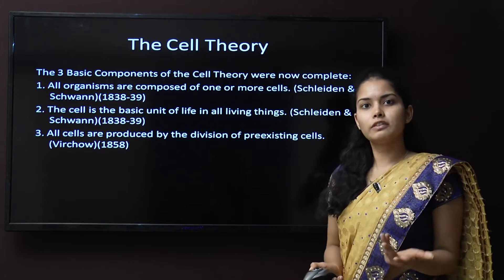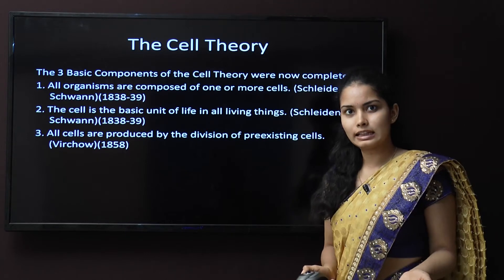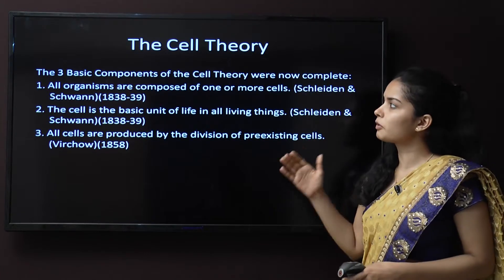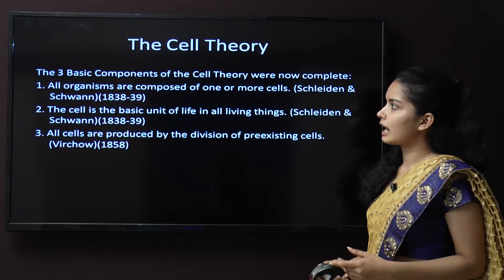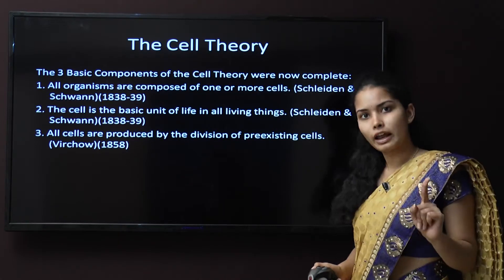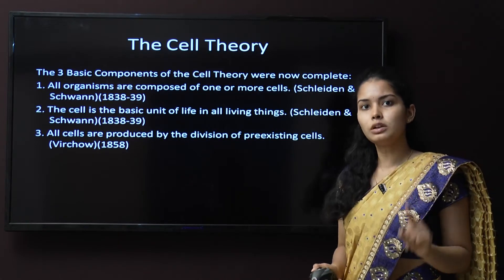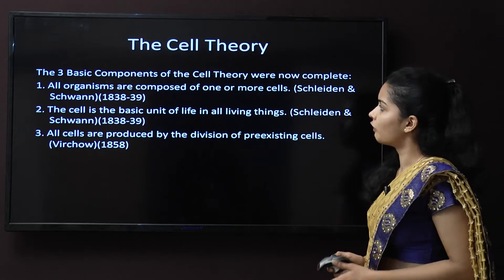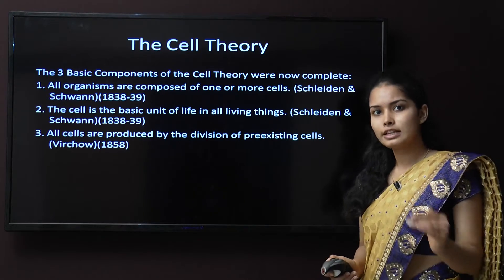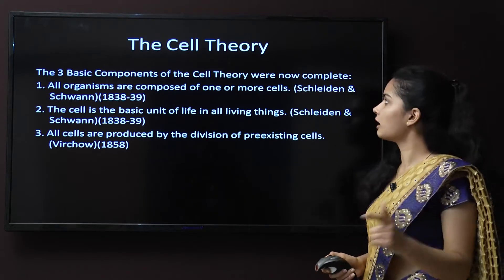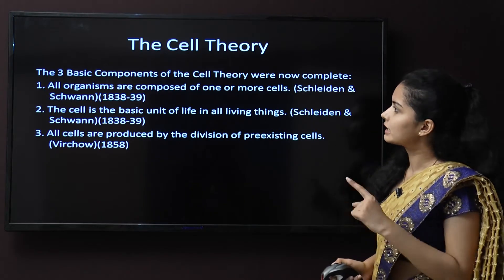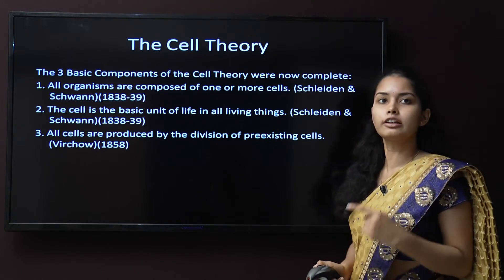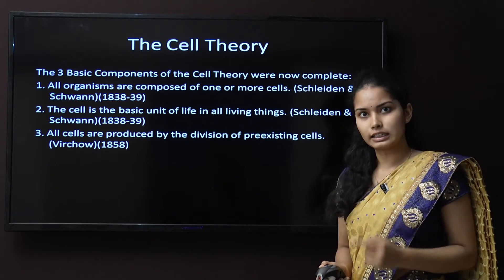First of all, we learn about the cell theory. The cell theory is basically made up of three basic components. The first rule is that all organisms are made up of one or more cells. This theory was done by Schleiden and Schwann in the year 1838 to 1839.